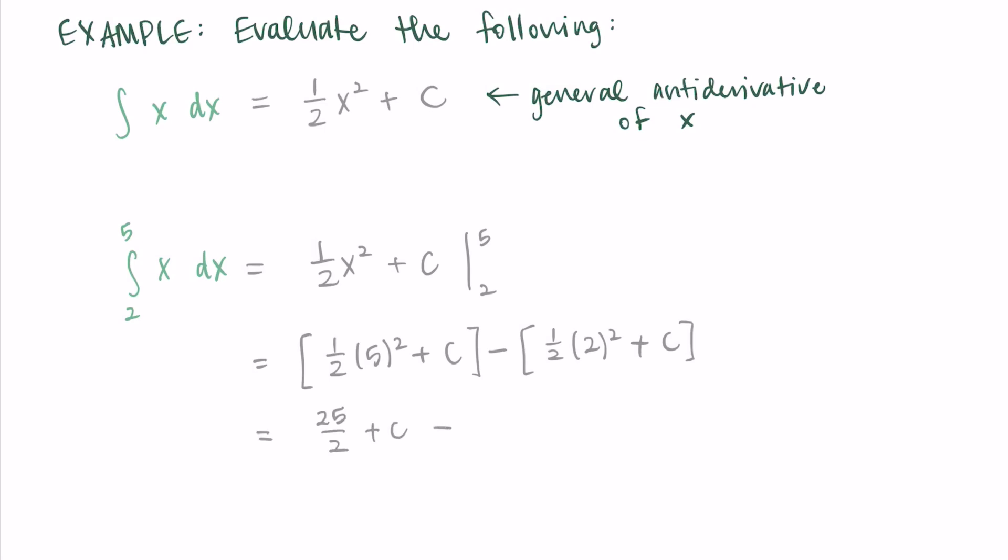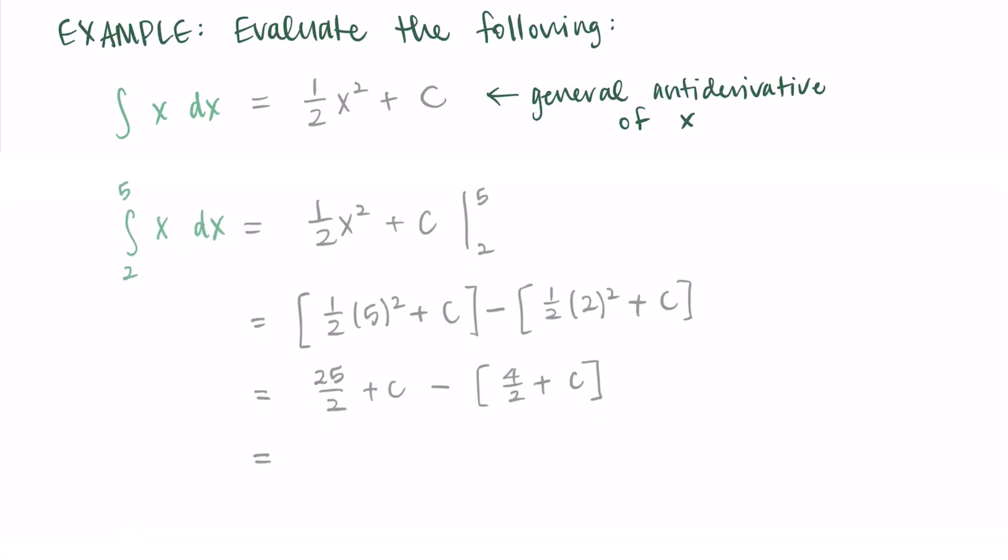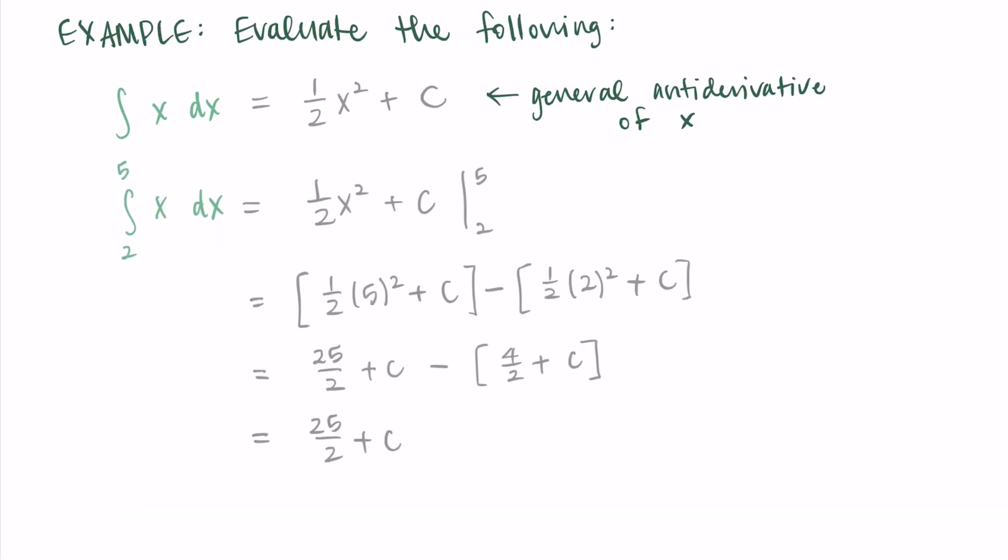So I'm getting 25/2 plus c minus the whole quantity 4/2 plus c. When I distribute and simplify this, my c's are going to cancel. So really that plus c was unnecessary. It's not needed for definite integrals because it cancels out.